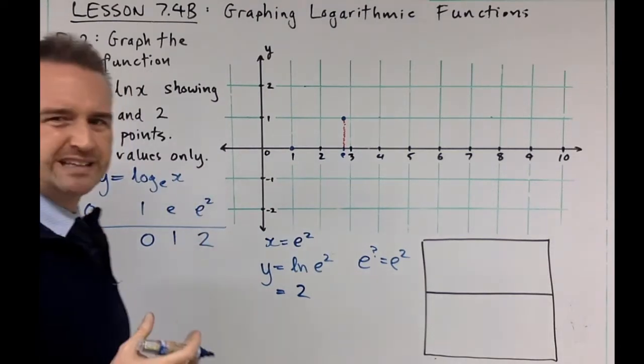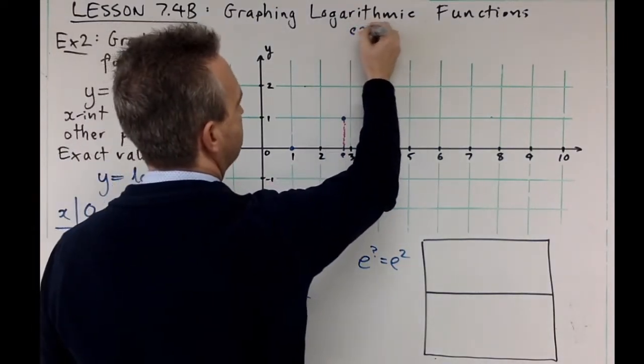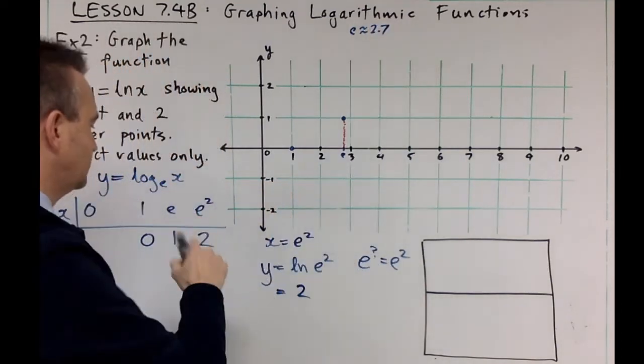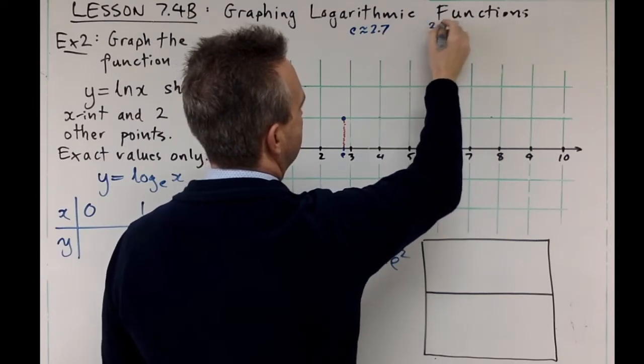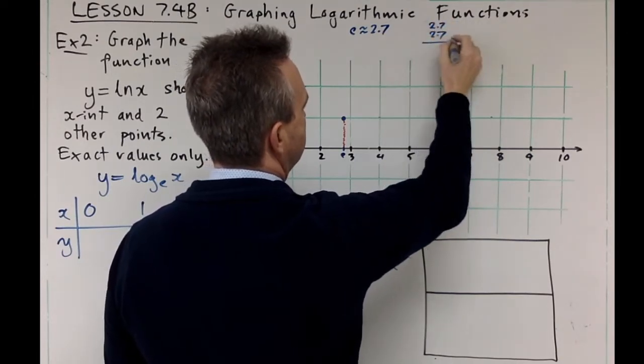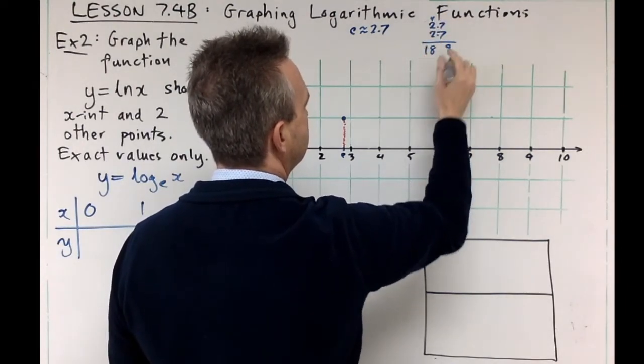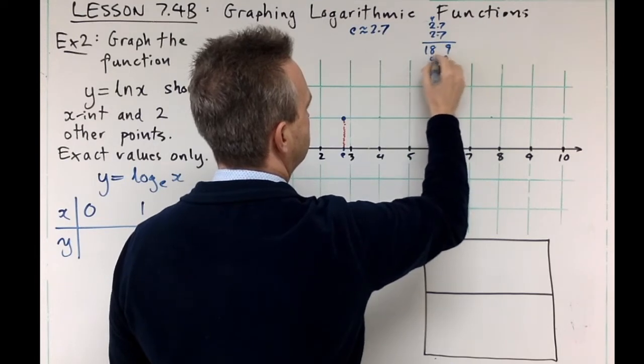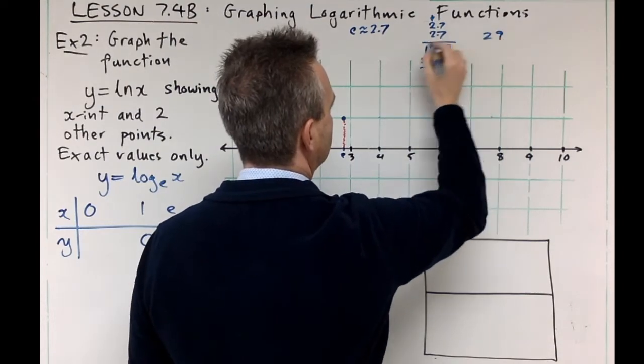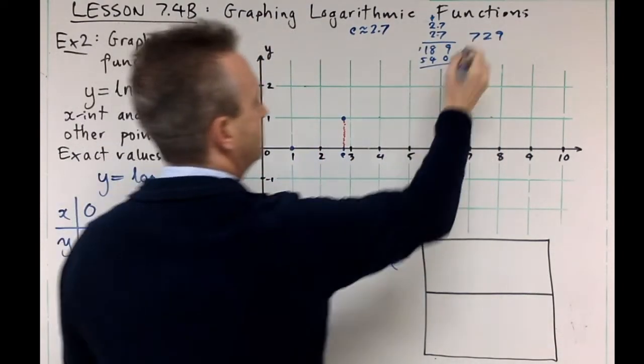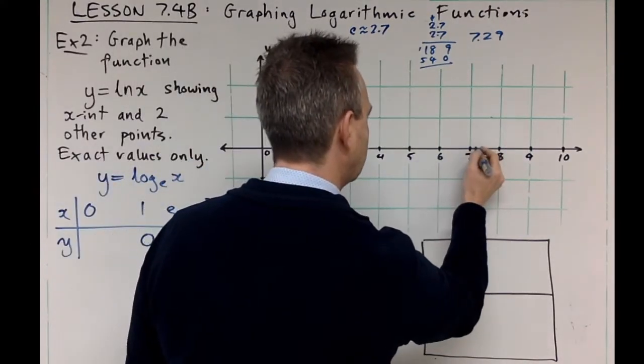Oh but what's e squared though? E is about 2.7, so what's e squared? Well e is going to be between... 2.7 times 2.7, what's that? Working through the calculation... that's about 7.29.